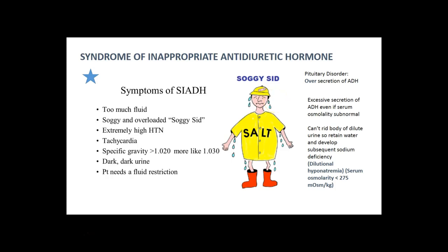The flip side of diabetes insipidus is Syndrome of Inappropriate Antidiuretic Hormone, or SIADH. This is when somebody has too much ADH on board — too much fluid, extremely high blood pressure, tachycardia, increased specific gravity, and very concentrated dark urine. This patient actually needs a fluid restriction. Because of all the fluid retained, they may have a subsequent sodium deficit — dilutional hyponatremia — especially when serum osmolarity is greater than 275, which leads to low sodium levels and puts them at risk for seizures.